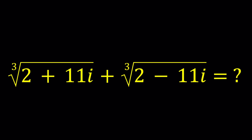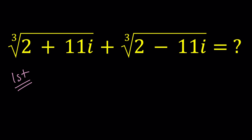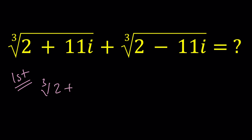I'll be presenting at least two methods, so let's start with the first one. For my first method, I'm going to find the cube root of (2 + 11i). To find it, I'm going to set it equal to another complex number — because the cube root of a complex number can also be written as a complex number, a + bi. Then let's go ahead and cube both sides.